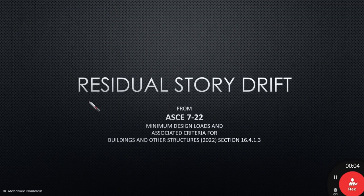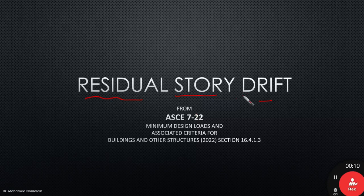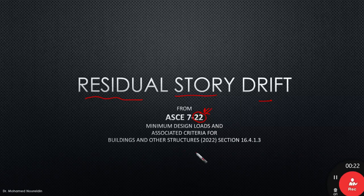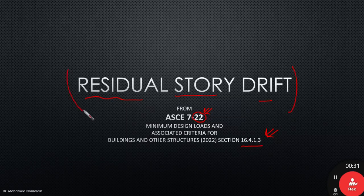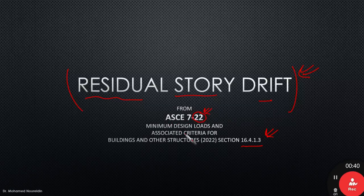In this video I'm going to talk about residual story drift. This is taken from ASCE 7-22, the latest version of Minimum Design Loads and Associated Criteria for Buildings and Other Structures, under section 16.4.1.3. This is an important issue because it was not existent in the previous version, ASCE 7-16.